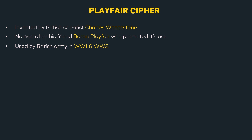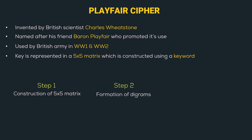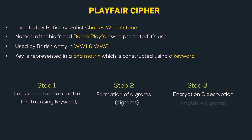Playfair Cipher is a bit different from other ciphers because the key is represented in a 5x5 matrix which is constructed using a keyword. We have two new things here: a 5x5 matrix and a keyword. For easy understanding, we will learn Playfair Cipher in 3 steps. Step 1: construction of the 5x5 matrix. Step 2: formation of digrams. Step 3: encryption and decryption. In step 3, we use both the matrix and the diagrams for encryption and decryption.